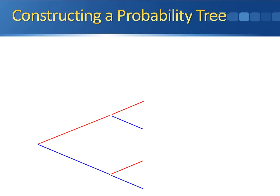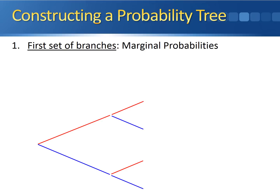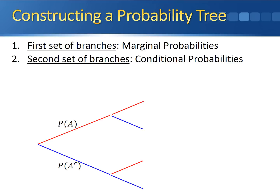Here's how we construct the probability tree — it's a three-step process. Along the first set of branches, you have a set of marginal probabilities. For event A, which does not depend on any other event, along the top we have the probability that A occurs, and along the bottom we have the probability that A does not occur. Along the second set of branches, we have conditional probabilities. For event B, which depends on whether or not A has occurred, following the top path where A has occurred, we have the probability of B given A, and along the blue branch is the probability that B does not occur given that A has occurred.